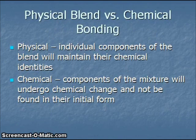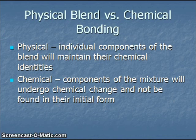Physical blend versus chemical bonding. Please note, in a physical blend, we have individual components of the blend that are going to maintain their chemical identities. For example, if we have salt, NaCl, dissolved in water, salt is still present and water is still present. Neither substance has had its identity change. Whereas if we have chemical bonding taking place, the components of a mixture will actually undergo chemical change and will not be found in their initial form. If you take pure sodium and place it into a container of water, a chemical reaction is going to occur. And after the reaction is complete, what we would have instead now would be a combination of sodium hydroxide, NaOH, and hydrogen gas, H2.